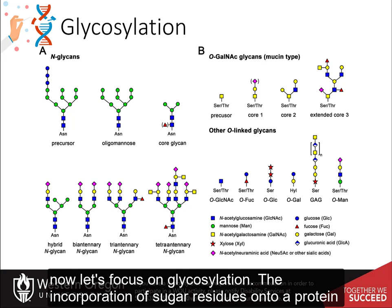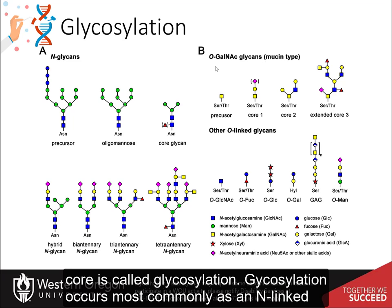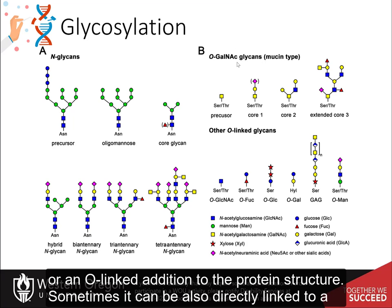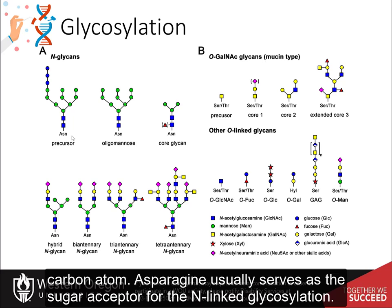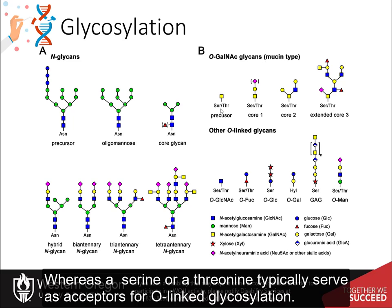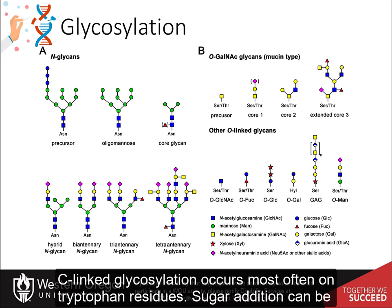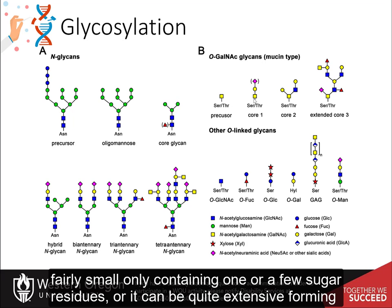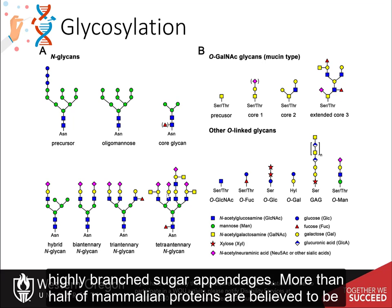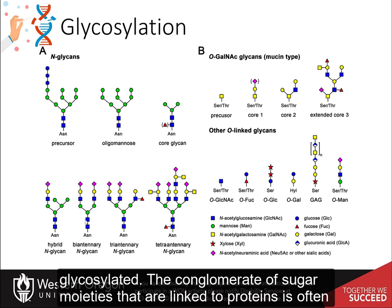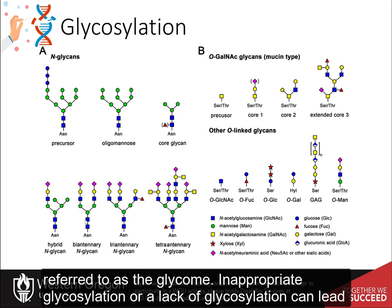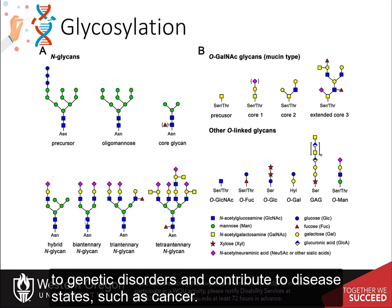The incorporation of sugar residues onto a protein core is called glycosylation. Glycosylation occurs most commonly as N-linked or O-linked addition to the protein structure, and sometimes directly linked to a carbon atom. Asparagine usually serves as the sugar acceptor for N-linked glycosylation, while serine or threonine typically serve for O-linked glycosylation, and C-linked glycosylation occurs most often on tryptophan residues. Sugar addition can range from one or a few residues to highly branched sugar appendages, and more than half of mammalian proteins are believed to be glycosylated. Inappropriate glycosylation can lead to genetic disorders and contribute to disease states such as cancer.